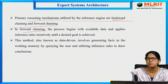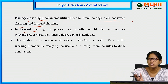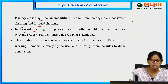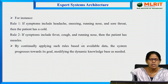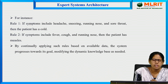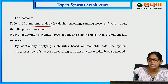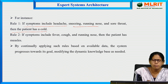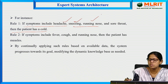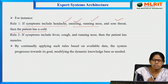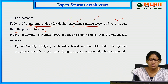The forward chaining process begins with the data — it starts with some initial data and derives conclusions from it. That is why it is also known as data-driven. For example: if symptoms include headache, sneezing, running nose, and sore throat, then the patient has a cold. Headache, sneezing, running nose, and sore throat are the data, and by using this data it draws the conclusion — that is forward chaining.